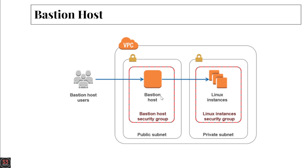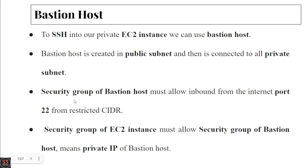In short, we use the Bastion Host to SSH into our private instances. Users log into the Bastion Host and from there SSH into the private instances and ping them. Now let's move on to the hands-on demo and create the Bastion Host, then SSH into our private EC2 instance using it.